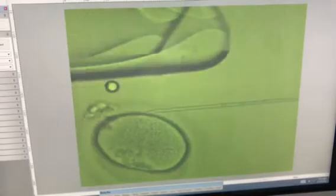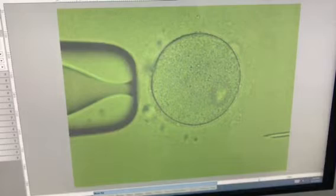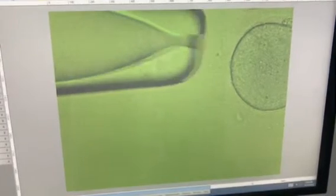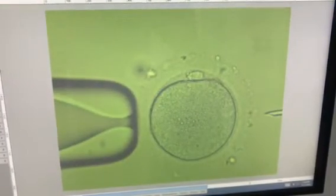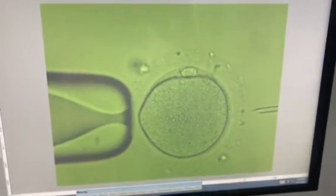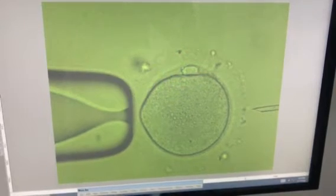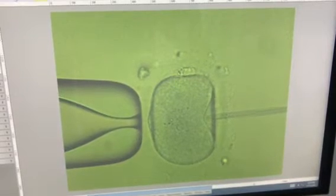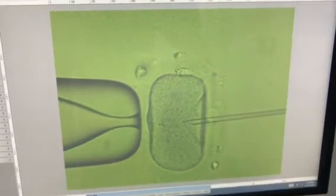I am going to inject the last oocyte. In her previous cycle, she has collected only 4 oocytes and this time also collected 4 oocytes. This is the last egg.